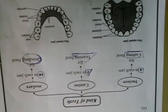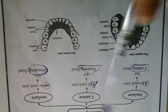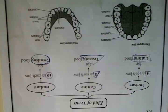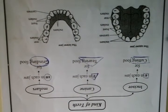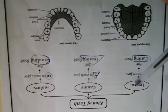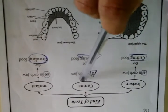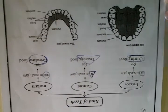Let's start to learn about the kinds of teeth. We have three types of teeth in the upper jaw and the lower jaw: incisors, canine, and molars.